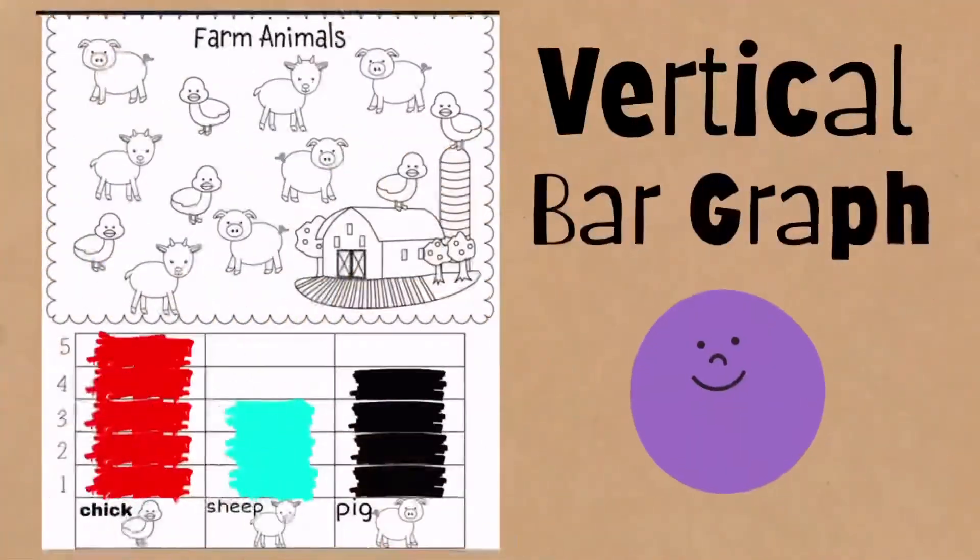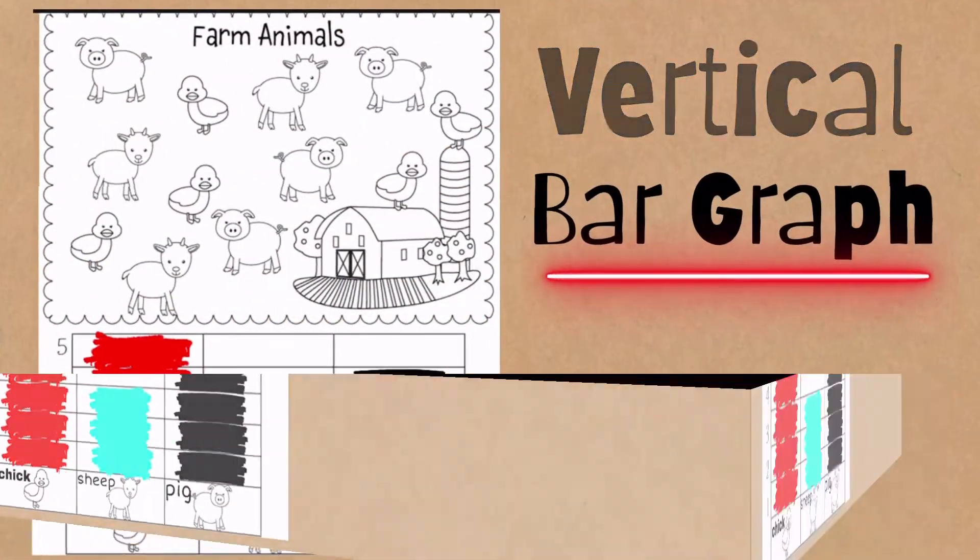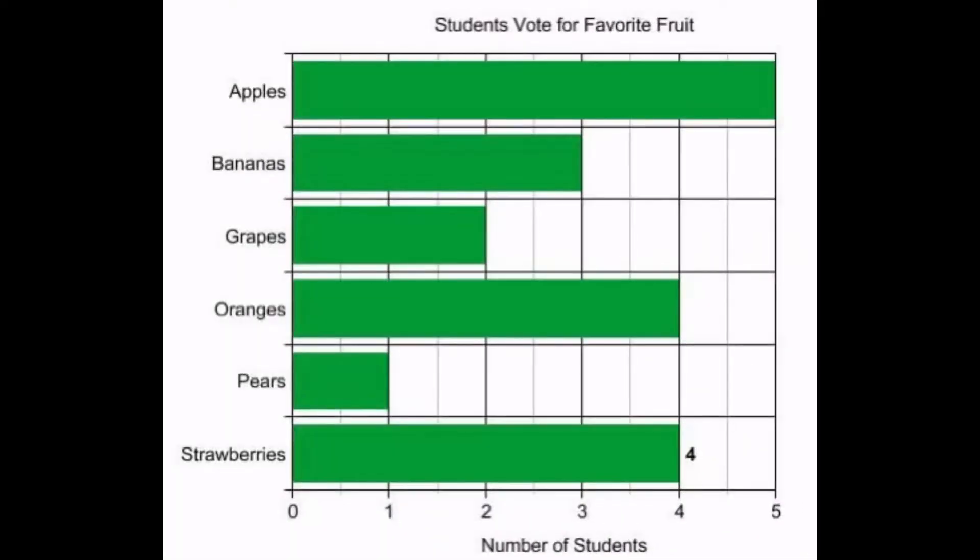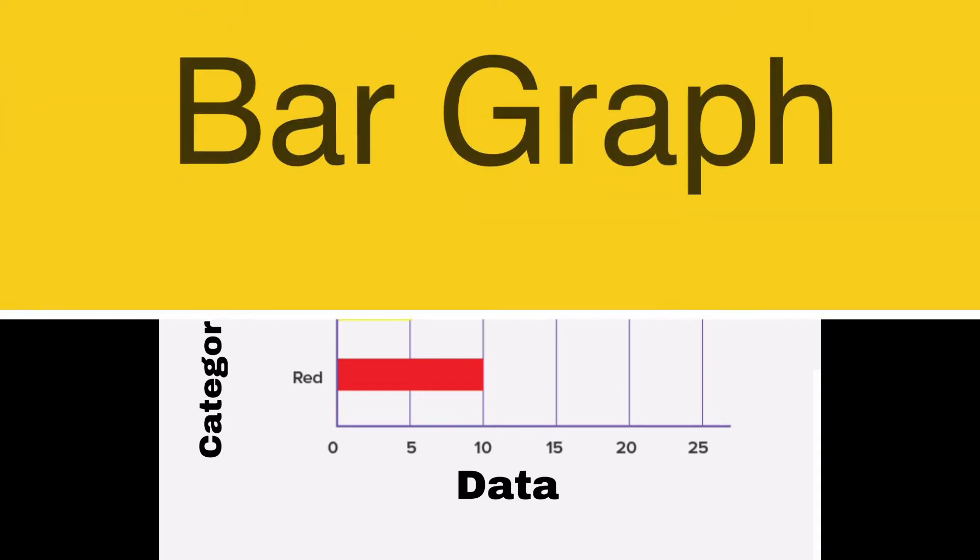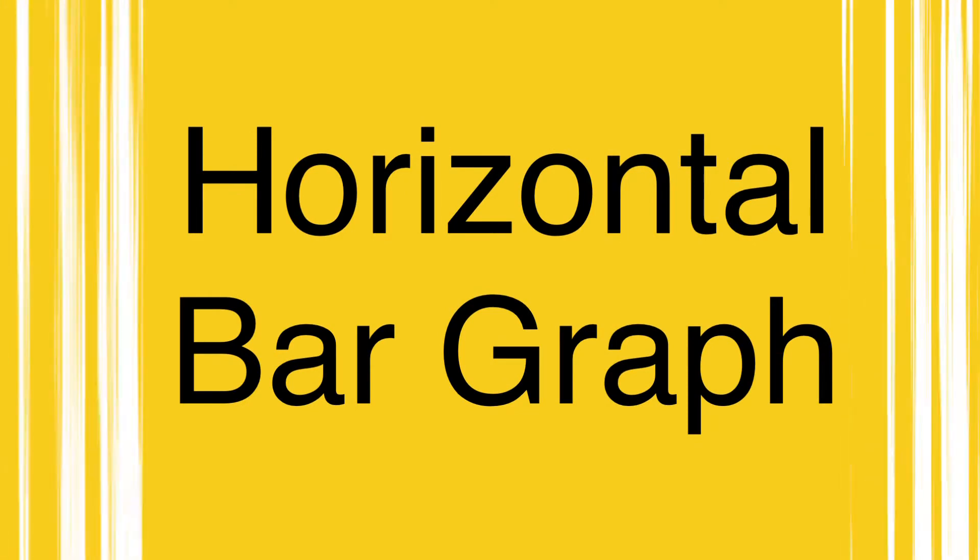This is a vertical bar graph. A few days ago, we have learned another kind of bar graph. And it looks just like this and this. Do you still remember what we call this kind of graph? Can you recall? Yes, we call this horizontal bar graph.